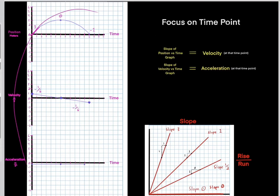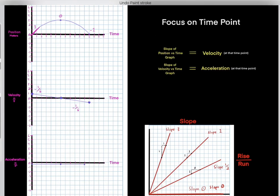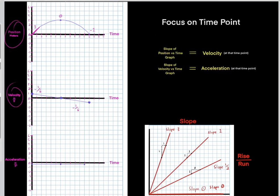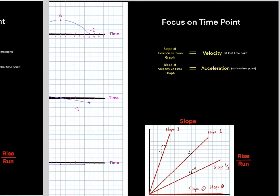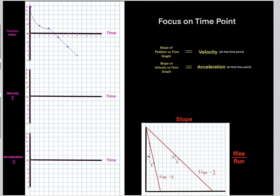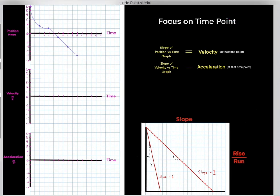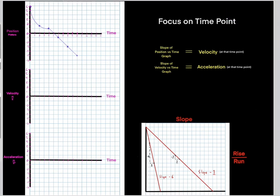Remember, all of these graphs represent the same motion. The only difference is each graph focuses on a different variable. Let's try a really hard example — the key point is to focus on a single time point at a time.